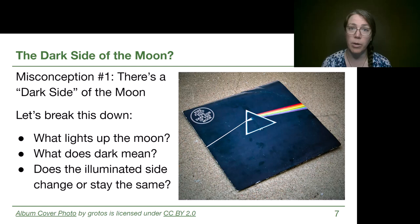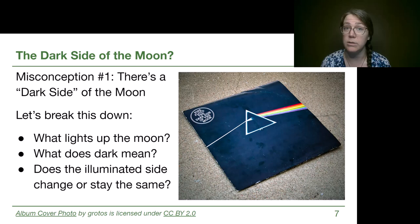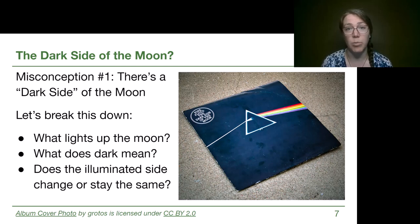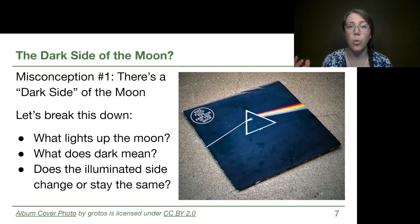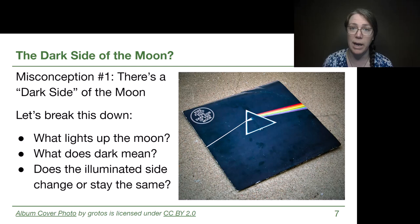First, think about what is lighting up the moon. Is it creating its own light or reflecting light from somewhere else? It's the Sun that lights up the moon, in the same way that Earth has daytime and nighttime when the Sun is visible or missing from a certain part of the surface. So 'dark' simply means nighttime on the moon — times when the Sun would not be above the horizon for someone standing on that patch of the moon's surface.